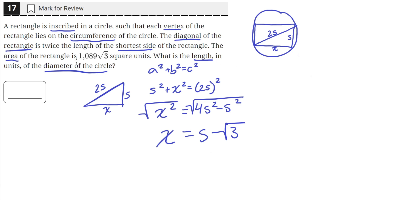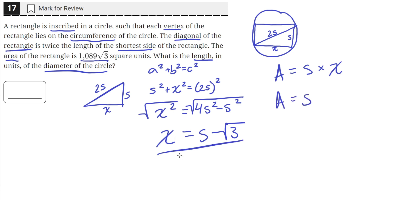Now we can use the information that the area of this rectangle is 1089 times the square root of 3. The area of the rectangle is equal to s times x — length times width. But we know that x equals the quantity we got from using the Pythagorean theorem on this triangle.